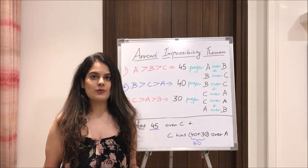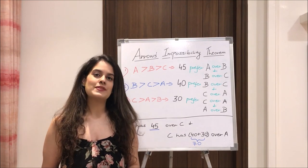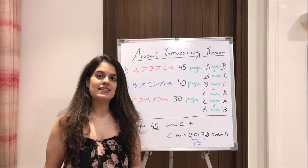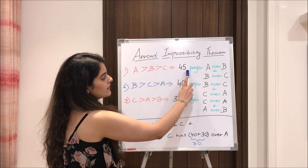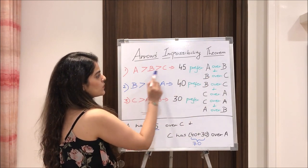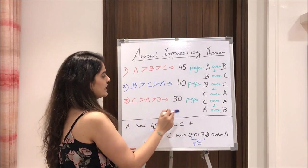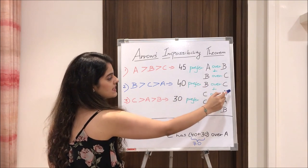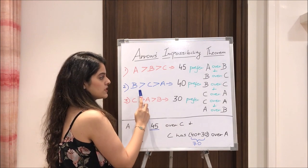Moving to an example that will make Arrow's impossibility theorem crystal clear: we have three candidates A, B, and C. There are 45 people who prefer A over B and B over C — so A is leading with 45 votes. There are also 40 people who prefer B over C and C over A, so B has the most votes in that group.